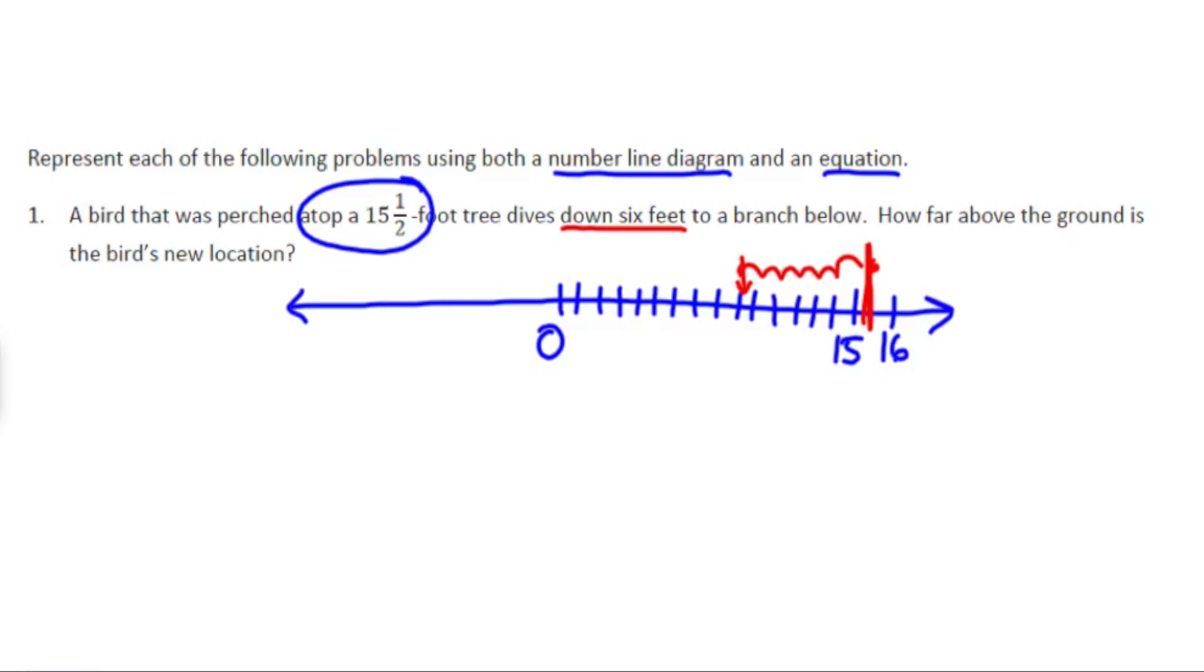And the question of course is, how far is he above the ground? Well let's write this as an equation. For our equation, he starts at 15 and a half feet. We could call that 15 and a half or positive 15 and a half. And then he goes down by six feet. So we're adding on a negative six.